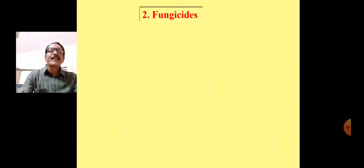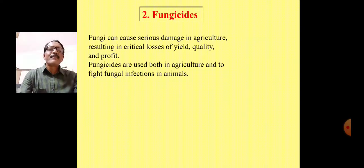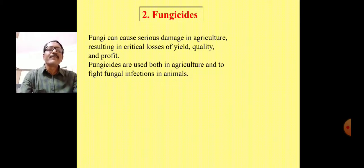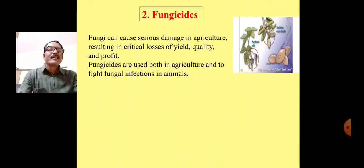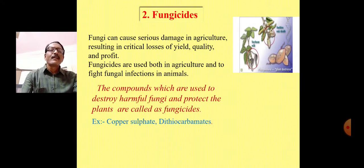The second type is fungicides. Fungi can cause serious damage in agriculture, resulting in critical losses of yield, quality and profit. Fungicides are used both in agriculture and to fight fungal infections in animals. The compounds which are used to destroy harmful fungi and protect the plants are called as fungicides. Common fungicides are copper sulfate, dithiocarbamates, and Bordeaux mixture.